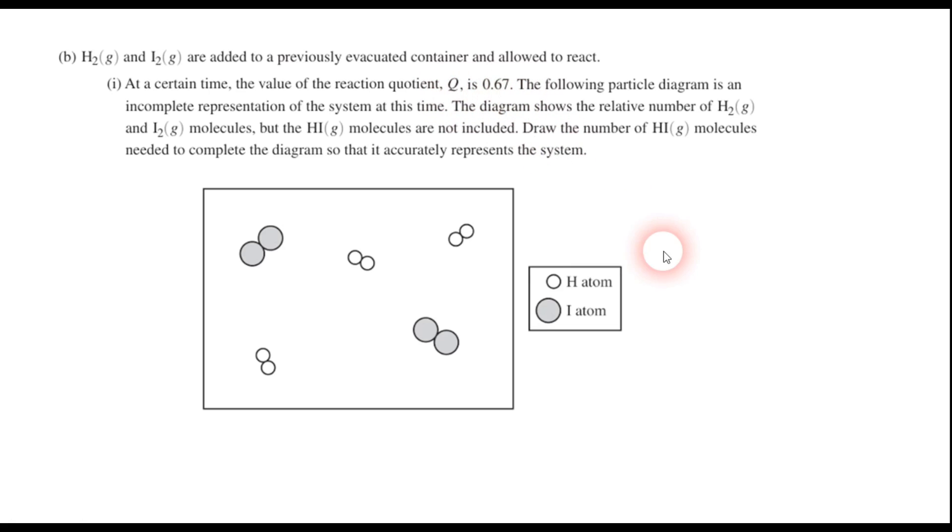The Q is 0.67. So we're going to write the expression for Q, which is basically the same as the expression for K, except we're not necessarily at equilibrium, so we can't call it K. So we'll have the Q here. And we're going to plug in some values that we see. Now, Q is 0.67. It's given to us in the problem. So that gets plugged in here. And if I look at the diagram, I have three hydrogen molecules and two iodine molecules. So I'm going to plug in the three and the two in the place of the hydrogen molecule and the iodine molecule concentration there.